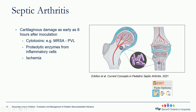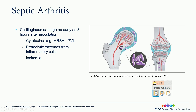Septic arthritis causes cartilage damage as early as eight hours after inoculation — from early animal studies. It's a multicellular process due to cytotoxins. For example, MRSA has PVL — Panton-Valentine Leukocidin — an exotoxin that induces pores in leukocytes, which releases cytotoxic cytokines and proteolytic enzymes that cause direct injury to chondrocytes and the collagen and proteoglycan matrix. The increased intra-articular pressure also causes ischemia and continuing damage to cartilage.